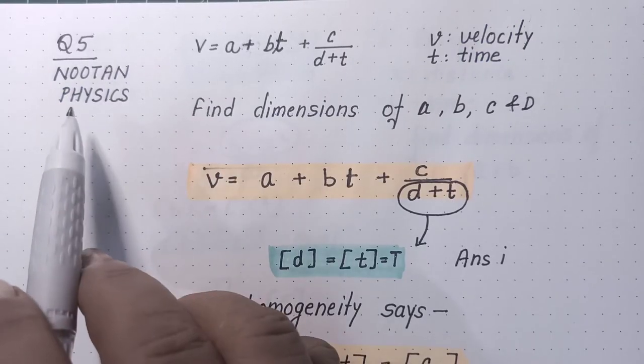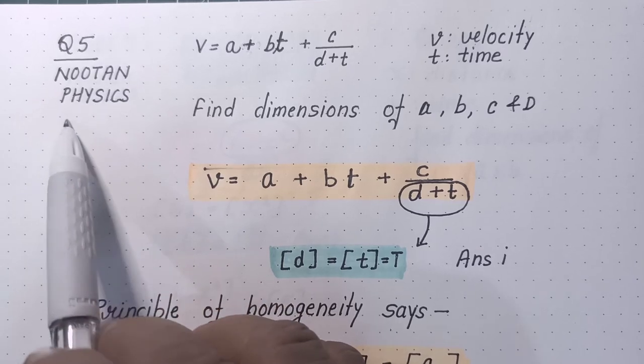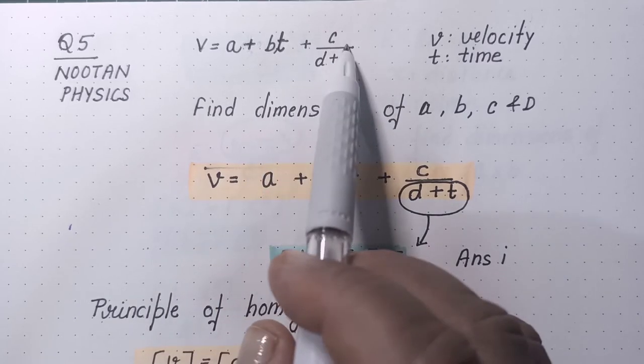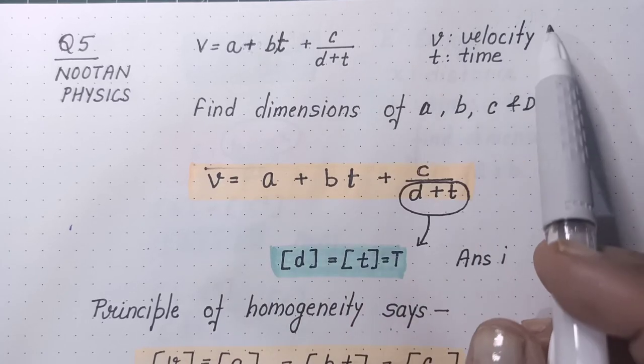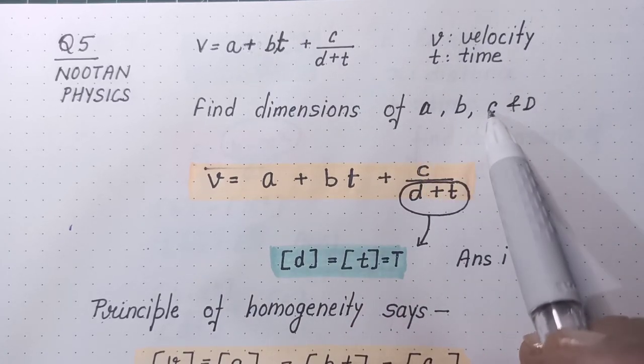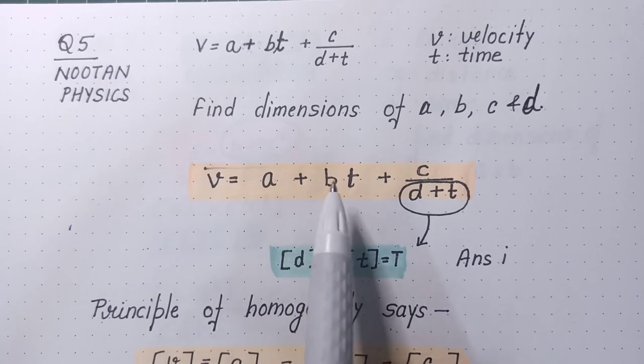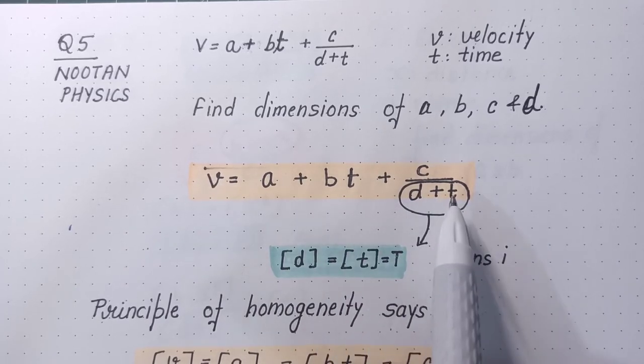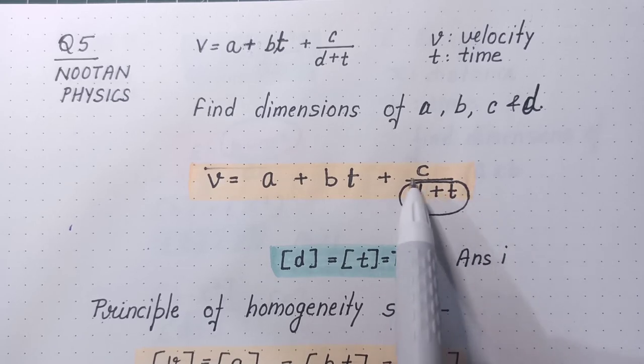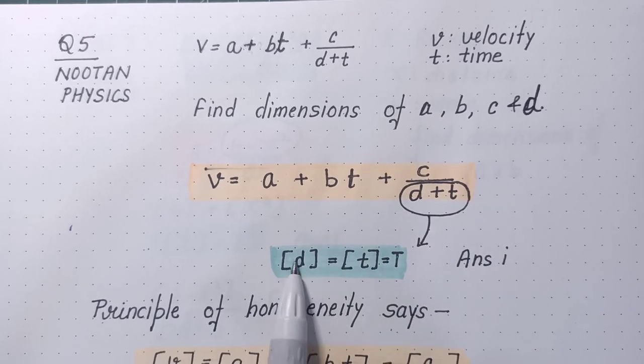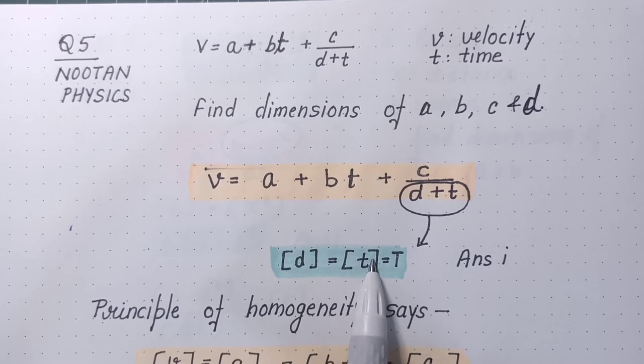Now, come to question number 5 of same exercise. Here you are given an equation V is A plus constant B into T plus constant C upon constant D plus T. V is velocity, T is time and you are asked to calculate dimensions of these 4 quantities. So first you write the whole formula again and focus on that quantity which is added. T is added to D. That means D must be same as time.